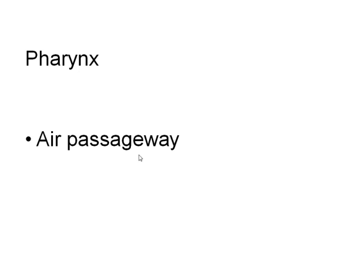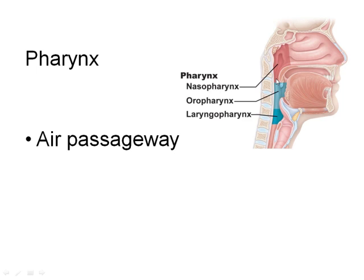The pharynx or throat acts as an air passageway in the respiratory system but can also be a food passageway in the digestive system. It is divided into three parts: the nasopharynx behind the nose, where only air should be; the oropharynx behind the mouth; and the laryngopharynx, just before the larynx, which is the next part of the respiratory system.